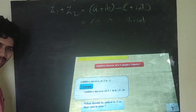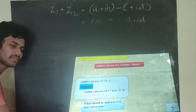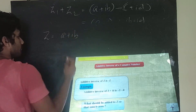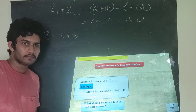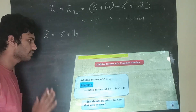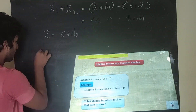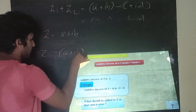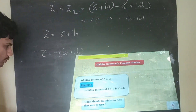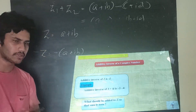The additive inverse of a complex number: the additive inverse is the number you add to z to get 0. For z = a + ib, if you take −z = −(a + ib) = −a − ib, then z + (−z) = 0. So the additive inverse of z is −z. This applies in real numbers as well.